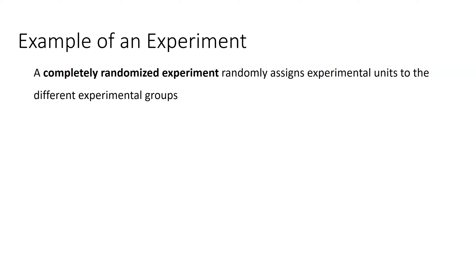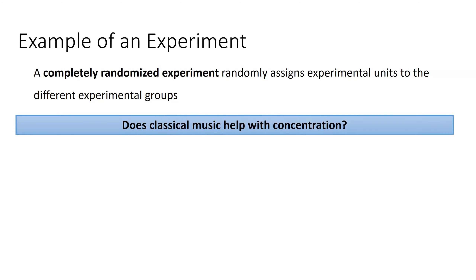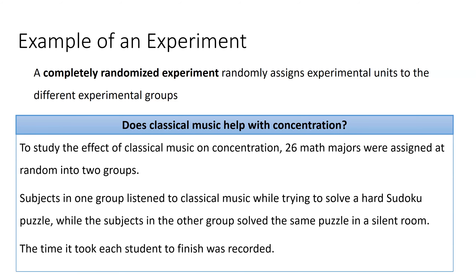A completely randomized experiment just means that individuals are randomly assigned to different experimental groups. Those individuals are called experimental units in experiments. Here's an example: does classical music help with concentration? To study the effects of classical music on concentration, 26 math majors were assigned at random to two different groups. Subjects in one group listened to classical music while solving a hard sudoku puzzle; subjects in the other group were in a silent room. The time to finish the puzzle was recorded.